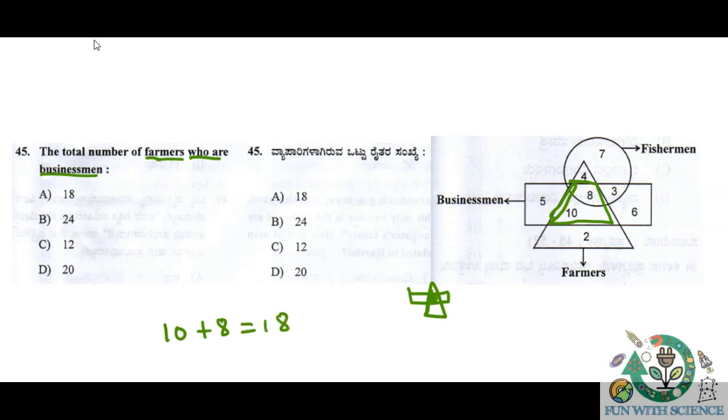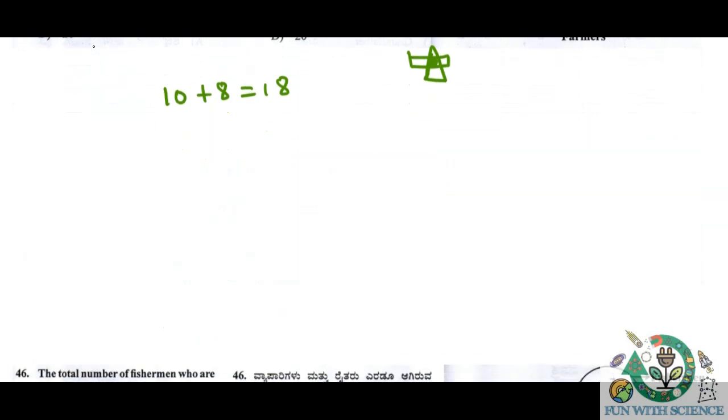So the total number of farmers who are also businessmen is 18. That is the answer for question number 45.